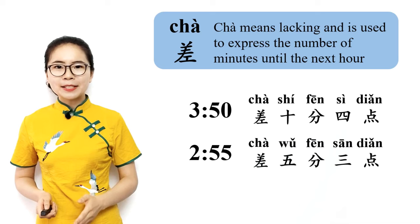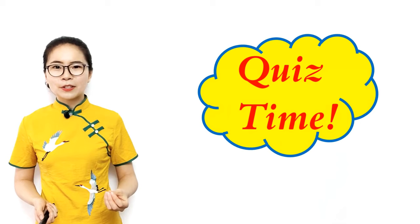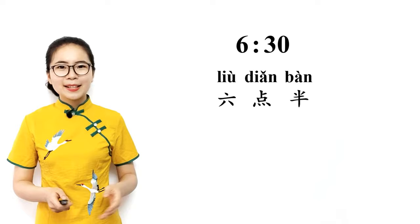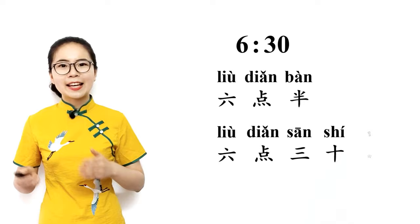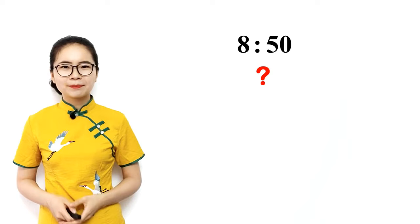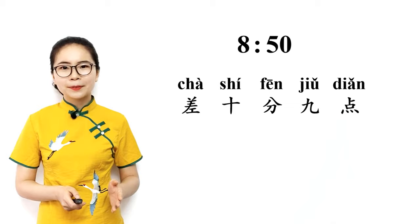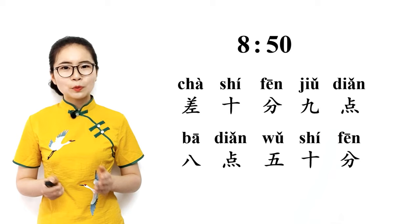Okay, now let's have a quiz on the special cases. First, how do you say 6:30? Correct. You can say 六点半. You can also say 六点三十分, or omit 分 and just say 六点三十. How do you say 8:50? Correct. You can say 差十分九点, which means lacking 10 minutes 9 o'clock, or 10 minutes to 9. You can also say 八点五十分, or 8:50.